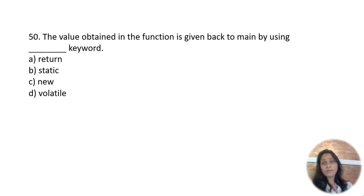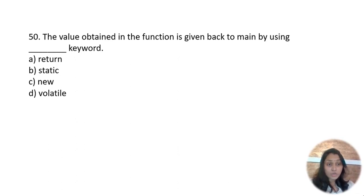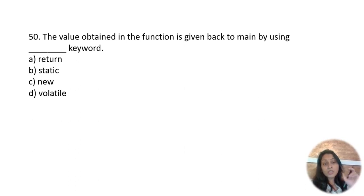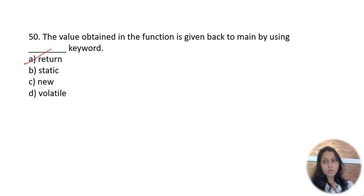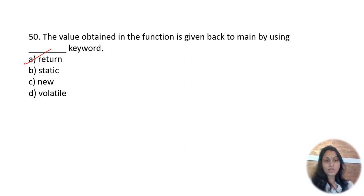The value obtained in a function is given back to the main function by using which keyword? The return keyword — whenever the return keyword is mentioned at the end of a function, the compiler goes back to the main program with the returned value.